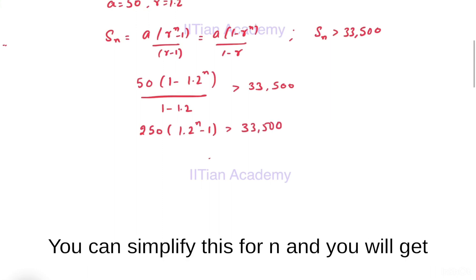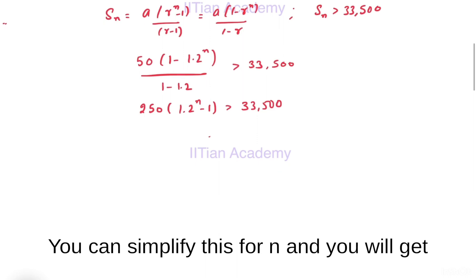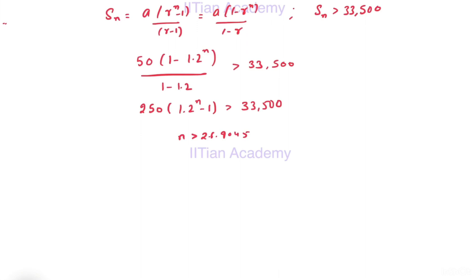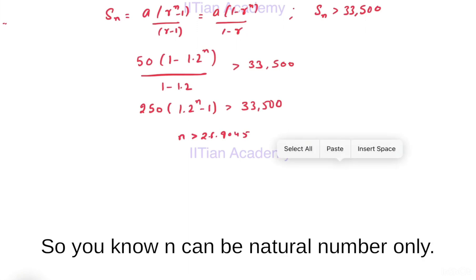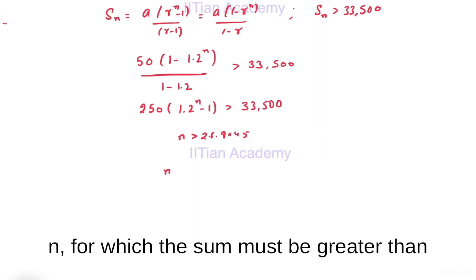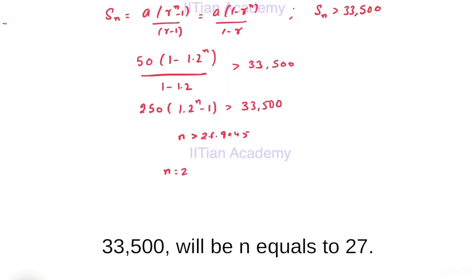You can simplify this for n and you will get the value of n to be greater than 26.9045. You know, n can be a natural number only. So the lowest value of n for which the sum must be greater than 33,500 will be n equals to 27.